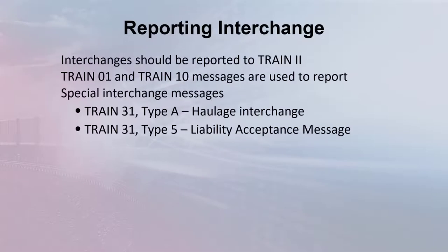Carriers should report interchanges through the TRAIN-2 system. The liability continuity system, or LCS, determines the official interchange date and time for car hire calculation purposes. The rules LCS uses to decide on the official date and time are intentionally skewed to favor a reporting carrier over a non-reporting carrier. We'll look at this in more detail later in this video. Within the TRAIN-2 system, TRAIN-01 and TRAIN-10 messages are used to report interchange information. All of the message codes and types can be found in the TRAIN-2 manual.